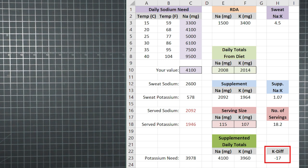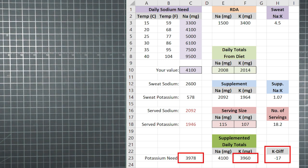The Kdiff field just shows you the difference between your supplemented total potassium and the need. It's a quick place to check if your selections will result in over or under consumption. In this case, we're a mere 17 milligrams of potassium shy of the computed daily need.